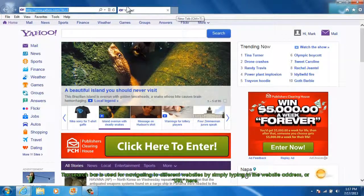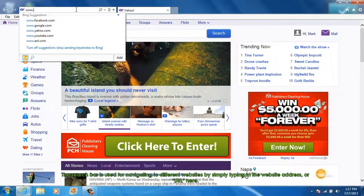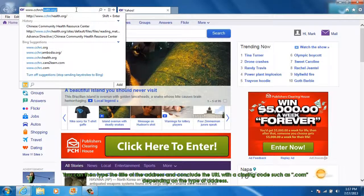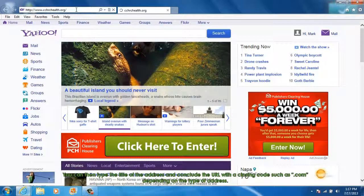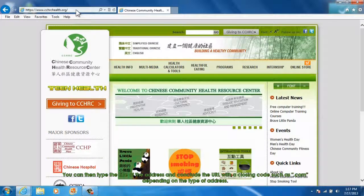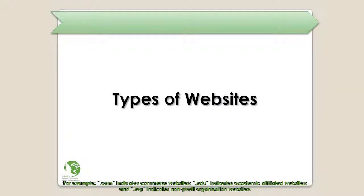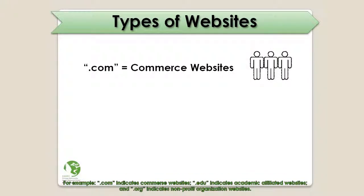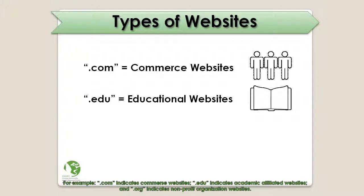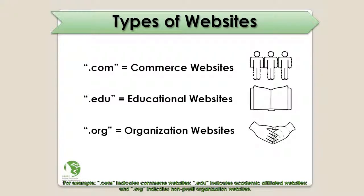The search bar is used for navigating to different websites by simply typing in the website address or URL. You can type the title of the address and conclude the URL with closing codes such as .com, depending on the type of address. There are many different types of addresses ending with different codes that indicate their purpose. For example, .com indicates commerce websites, .edu indicates academic affiliated websites, and .org indicates nonprofit organization websites. These are only a few examples.